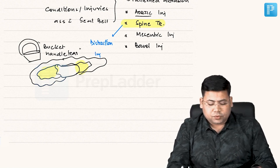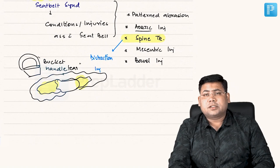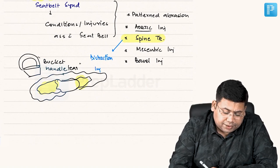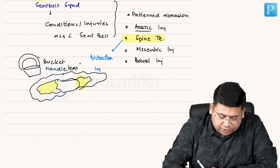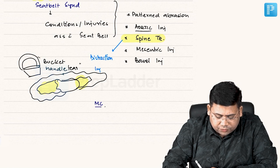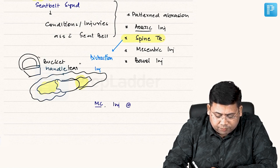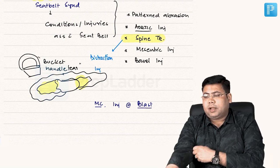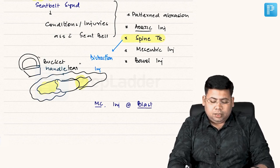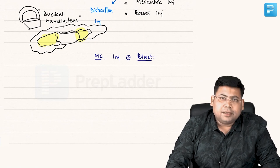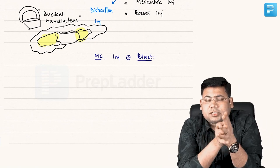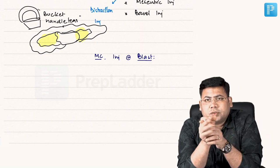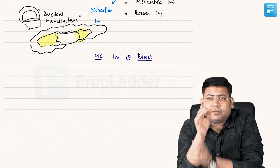This is bucket handle tear. This can be associated with seat belt injuries to the misentry. Next is the most common injury associated with blast. When we talk about blast, the most important is the place where actually the shock waves will damage or have the impact.